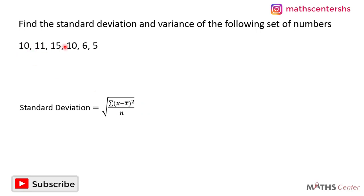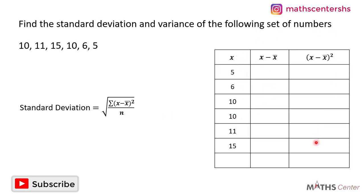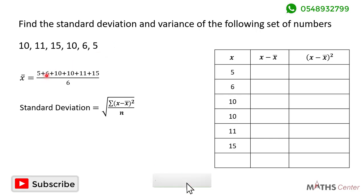Here we have 1, 2, 3, 4, 5, 6 — so we have 6 numbers and n is equal to 6. I'll draw a simple three-column table. In the first column I'll have the x values, in the second column x minus the mean, and in the last column x minus the mean squared. To find the mean, we add all the numbers and divide by 6: 5 plus 6 plus 10 plus 10 plus 11 plus 15 divided by 6 gives us 9.5.